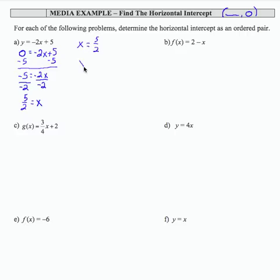To get a decimal, 5 divided by 2 will give me 2.5. To write my result as an ordered pair, the input goes first, and the output is 0.